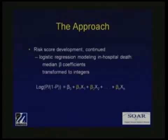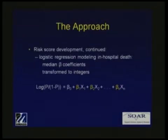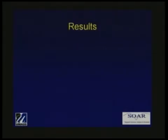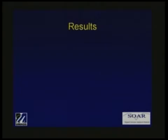In brief, I'll go over the statistical process for developing the risk score. This is the general form of a logistic regression equation. We modeled the log odds of in-hospital death, and after 200 bootstrap samples were obtained, the median of each of the beta coefficients for each of the covariates were then proportionally rounded to the nearest integer. This gave us the following result.